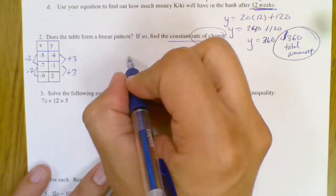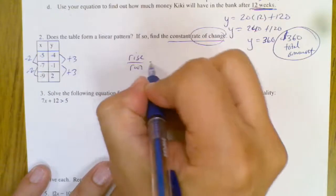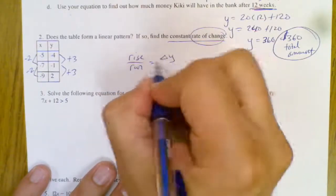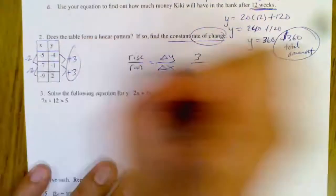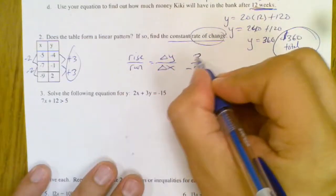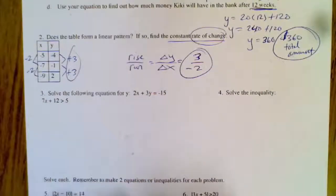You just got to make sure that you remember rate of change is a fancy way of saying slope. So we're going to say rise over run, which would be your change in y's over change in x's. So when I look at it, I want to make sure that 3 is on top and then negative 2 is on bottom because it's y's over x's. That's my rate of change and it is constant.